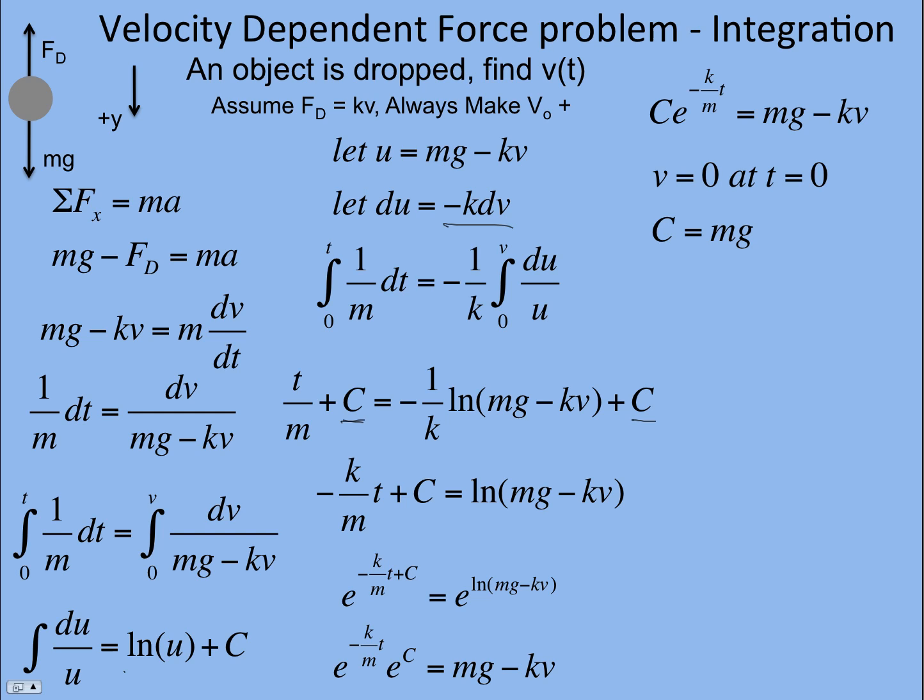And I know it was dropped. So the velocity is 0 at time 0. And so if I put in time 0 here and velocity 0, I get c is mg. So e to the 0 is 1. So I just get c equals mg because that goes away too.